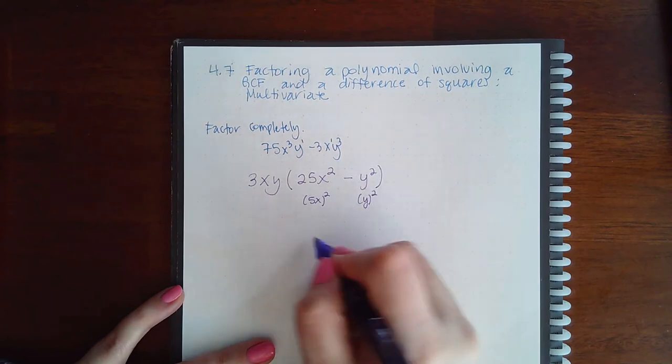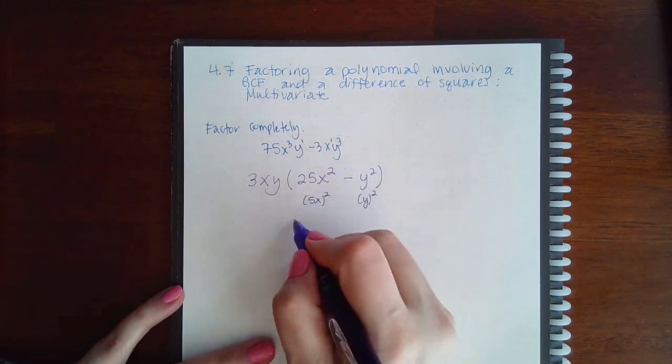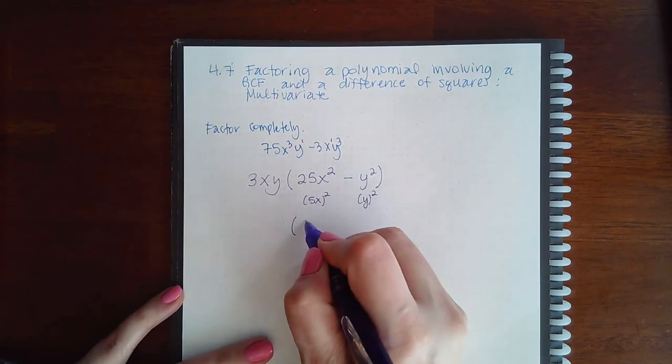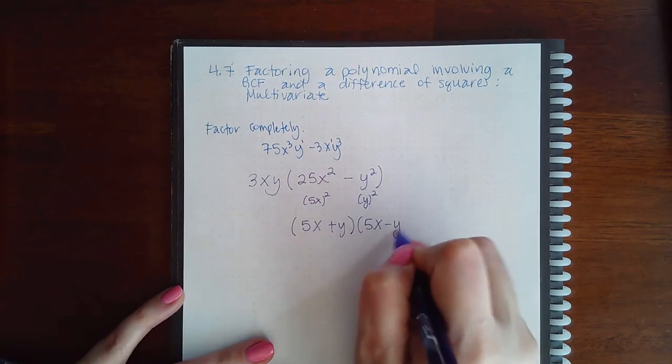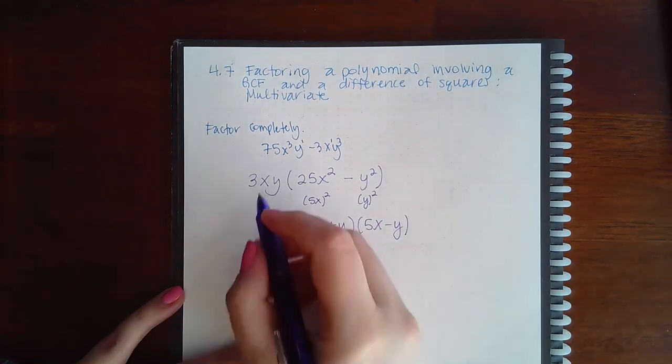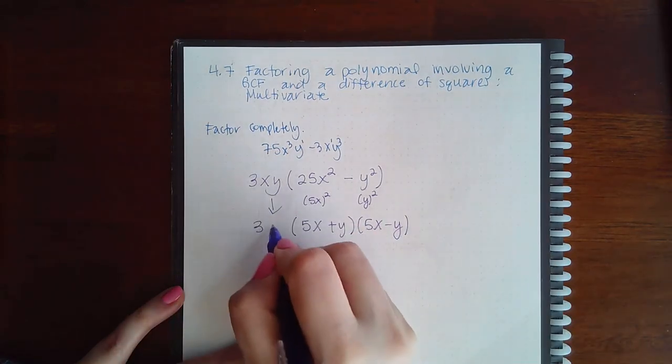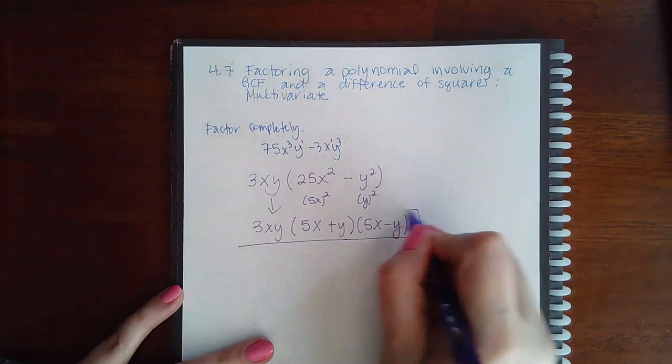I have a y that's being squared, so this difference of perfect squares can factor into (5x + y) and (5x - y). The GCF must come down into your final answer.